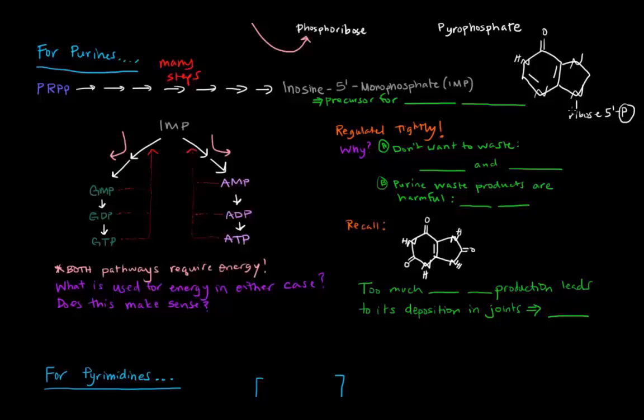It's like a nitrogenous base portion up here attached to a ribose with one phosphate group. So why is IMP important? Well, IMP is important because it's a precursor specifically for the purine nucleotides, which you should know as guanosine and adenosine. So now IMP can be used to create the GMP or the AMP. And each of those, this GMP can go on to make GDP and GTP. And the AMP can go on to make ADP and ATP.